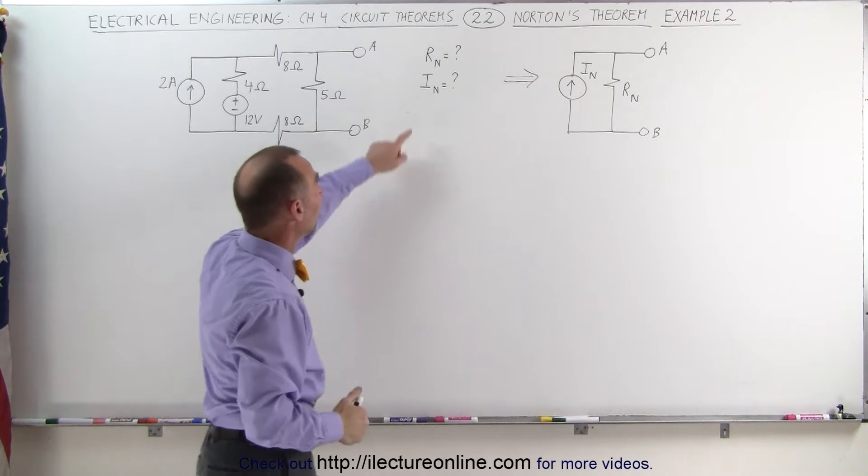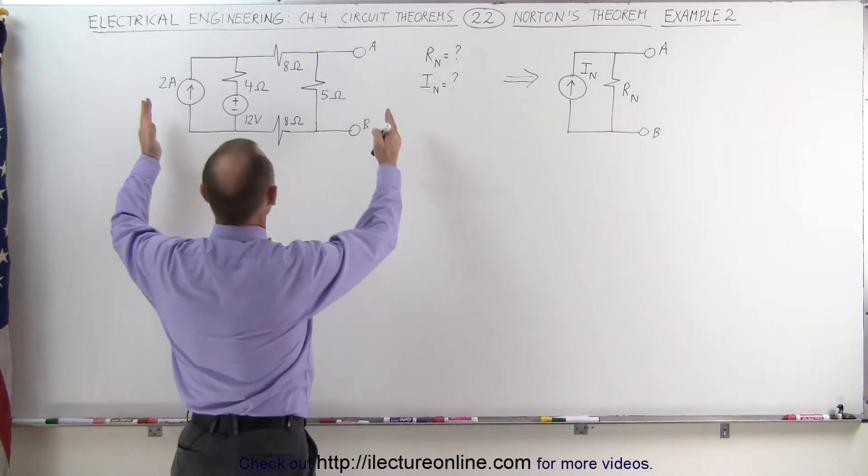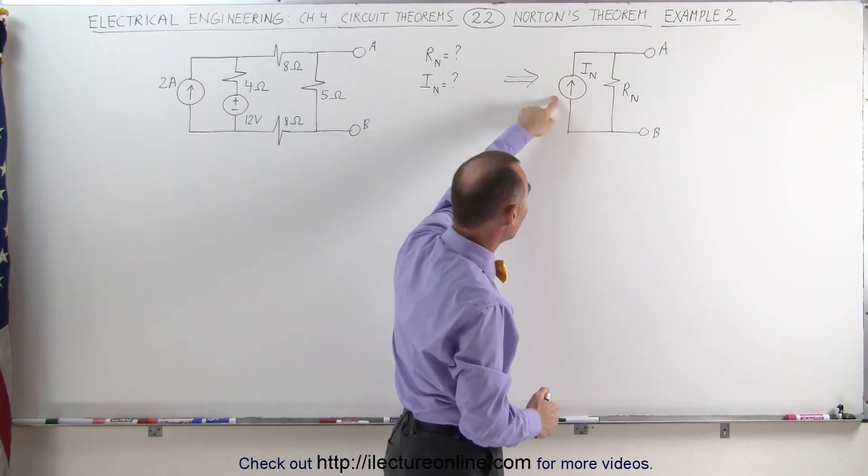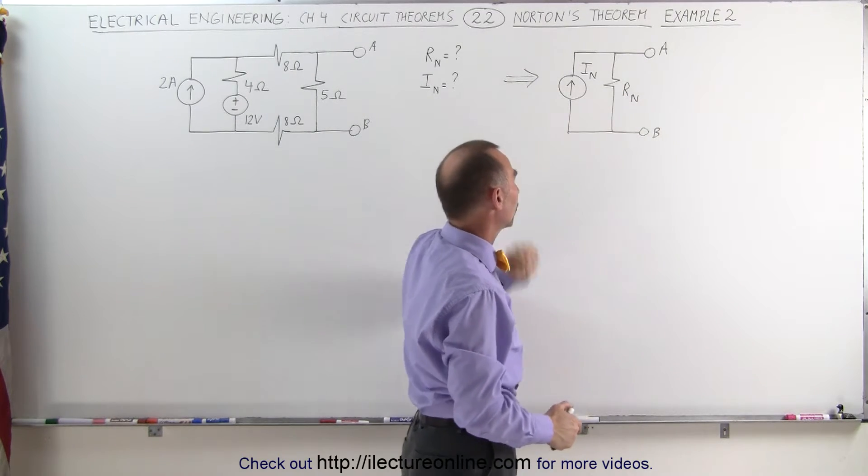So what we need to do here is find the Norton resistance and the current so that we can take this original circuit and turn it into the Norton equivalent circuit with a single current source I sub n and the single resistance R sub n in parallel with the current source.